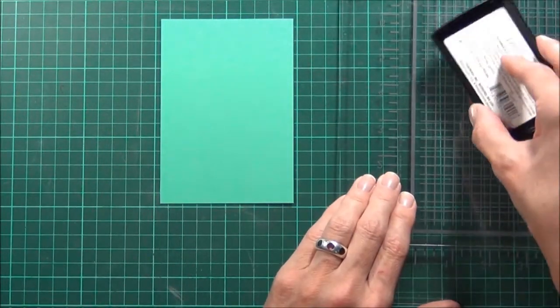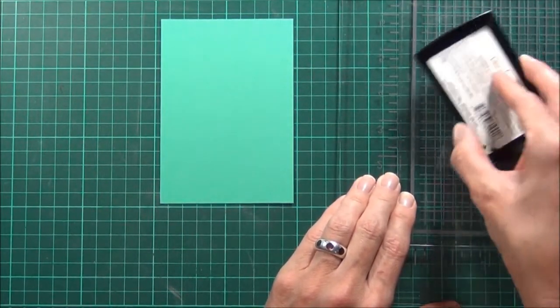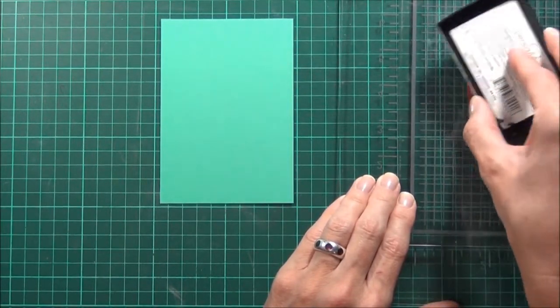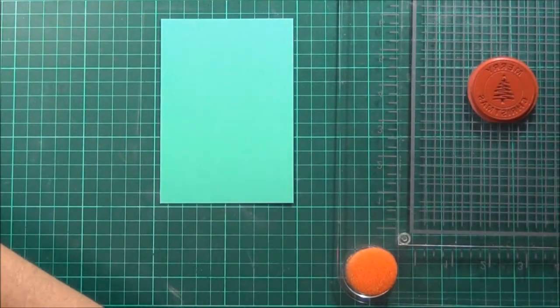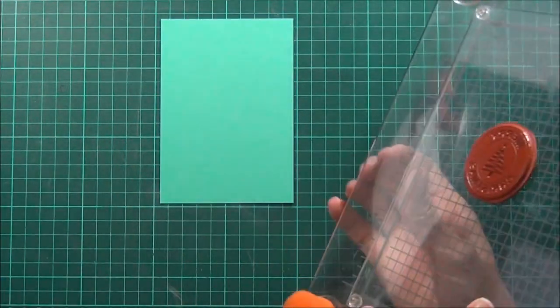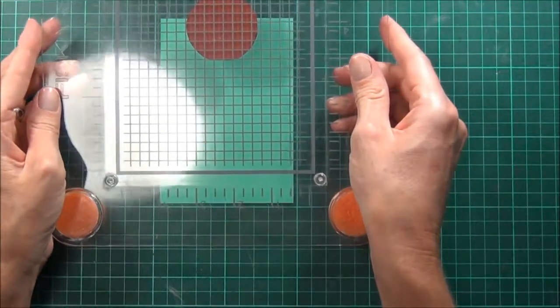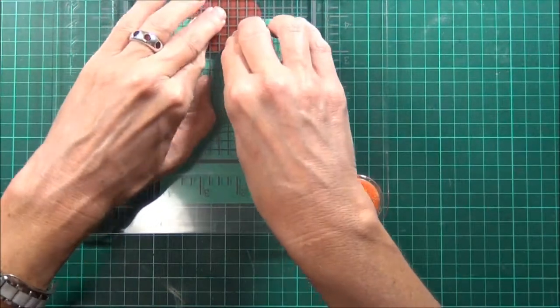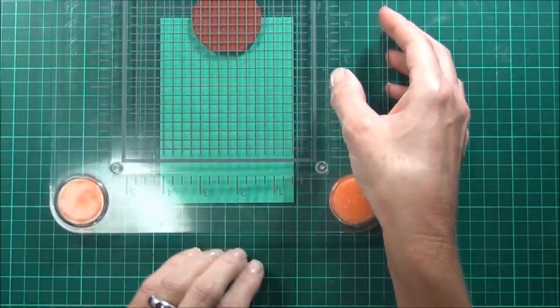I'm using some Versamark ink. The good thing about using the large Fiskars stamp press is that I won't have to emboss each image as I stamp them. It just gives me a bit more space between the feet of the stamp press so it means that hopefully I won't be touching the areas that I've stamped before I've had a chance to emboss them.